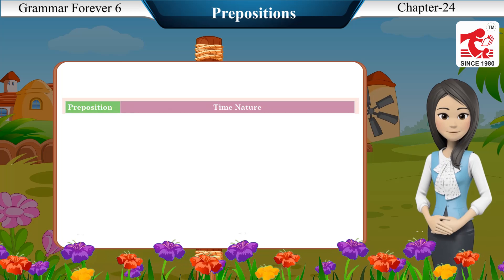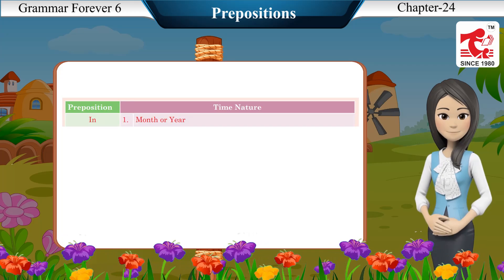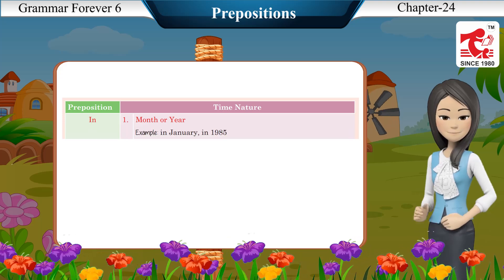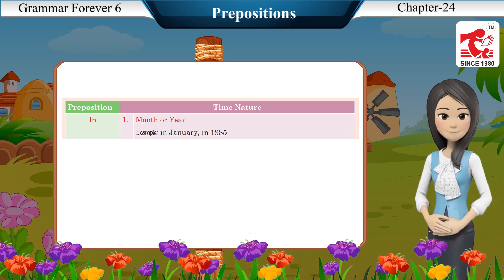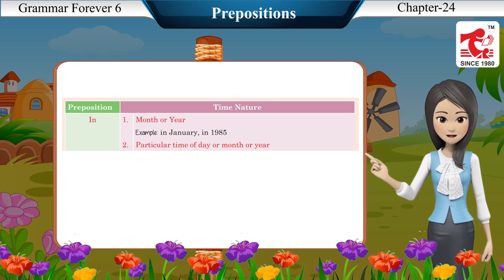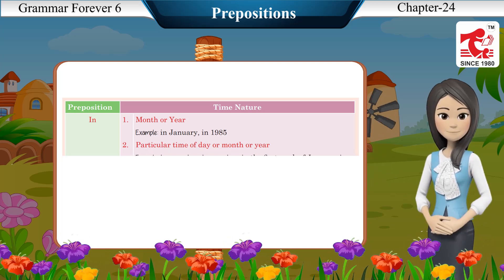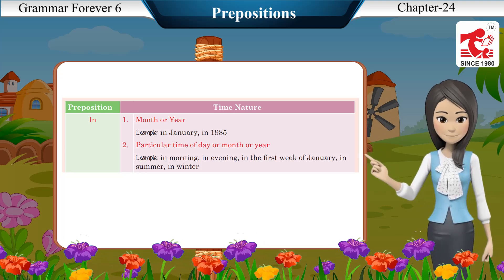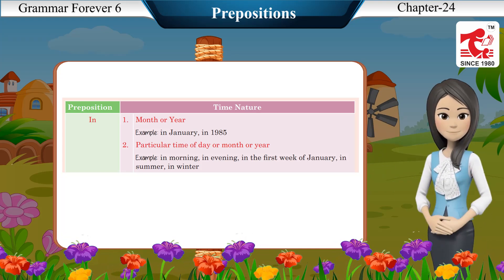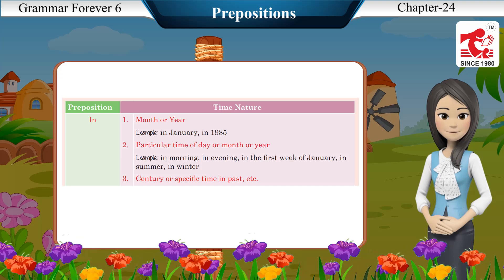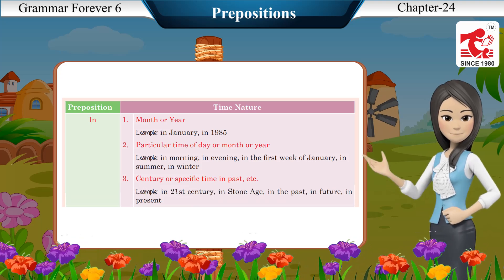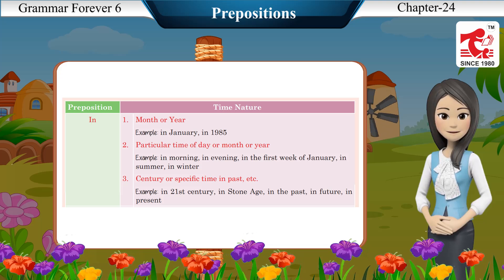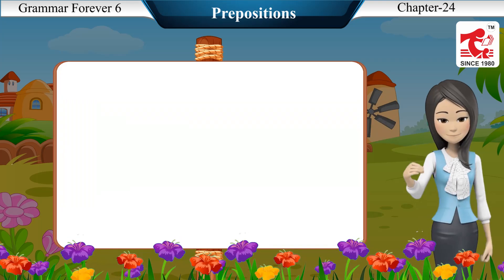Preposition 'in' for time: used for month or year — e.g., in January, in 1985. Also used for a particular time of day, month, or year — e.g., in the morning, in the evening, in the first week of January, in summer, in winter. Also used for a century or specific time in the past — e.g., in the 21st century, in the Stone Age, in the past, in future, in present.